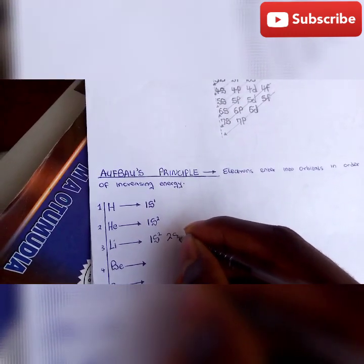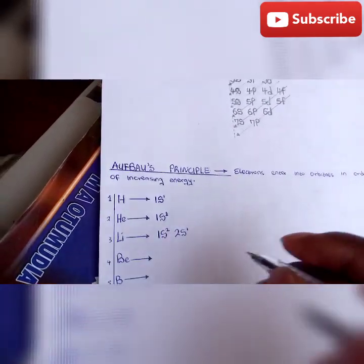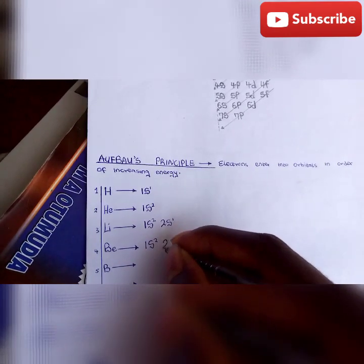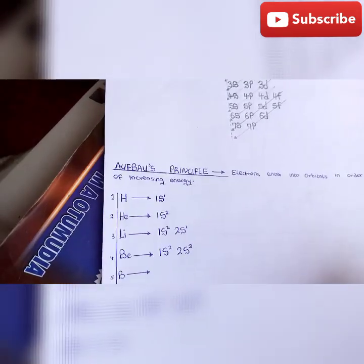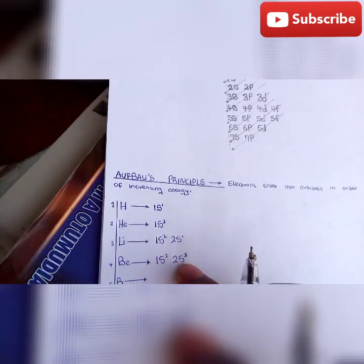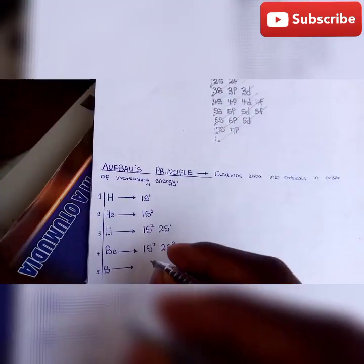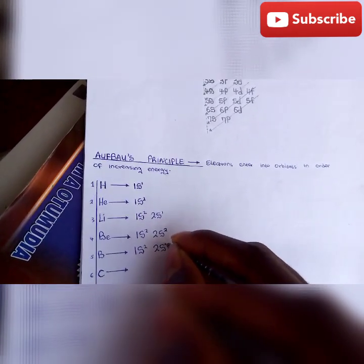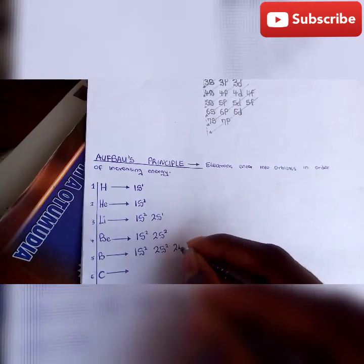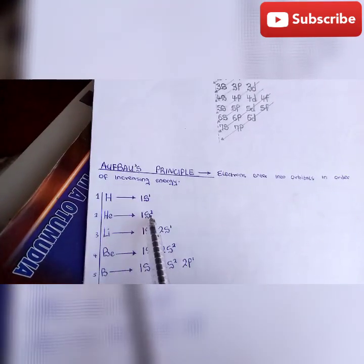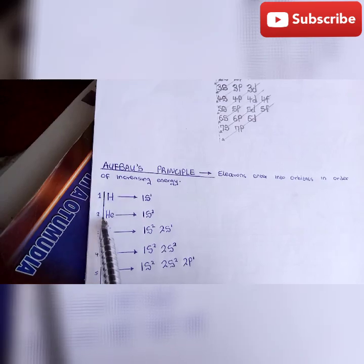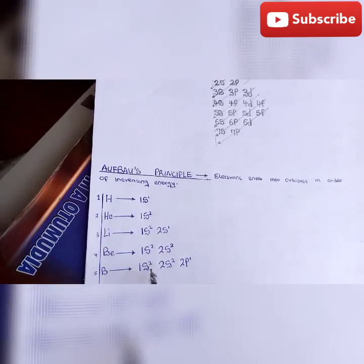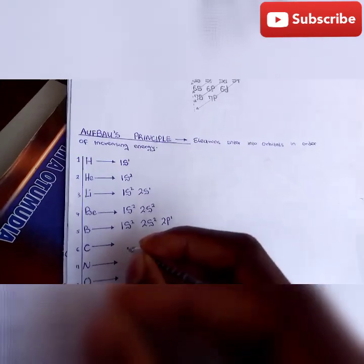S subshell can only accommodate two electrons. Let's start with lithium: 1s² 2s¹. Next one is beryllium: 1s² 2s². Next one is boron: 1s² 2s² 2p¹. Remember, after filling the s subshell, the next one is p. If you calculate the number of electrons on each subshell, it should give you the atomic number.